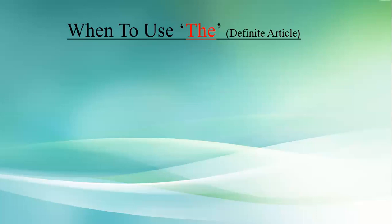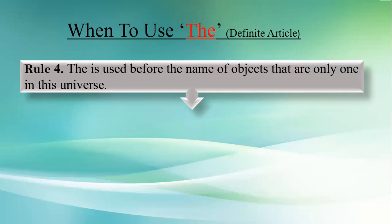We have now reviewed the primary information about articles, which we also discussed in our previous class. Now the main topic is the rules for using correct articles before correct nouns. In our previous class we discussed three rules; today we will learn some more rules. Rule four: 'the' is used before the name of objects that are only one in this universe.